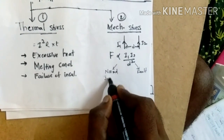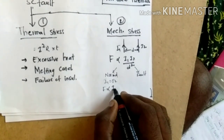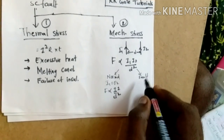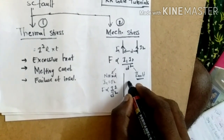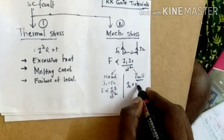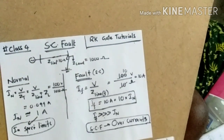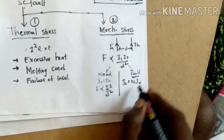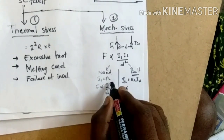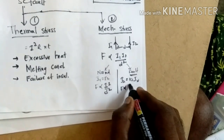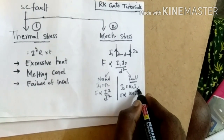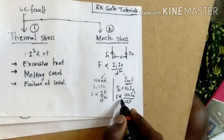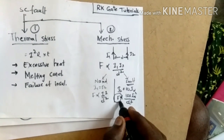During normal condition, the force is proportional to I² divided by d². During short circuit fault condition, the short circuit current is 10 times the normal current, as we calculated earlier. So the force becomes proportional to (10·I_n)² divided by d², which equals 100·I_n² divided by d². The force increases enormously — 100 times the normal force.